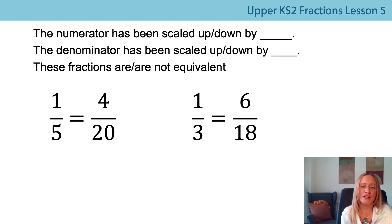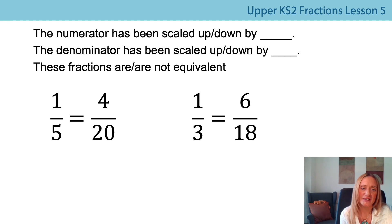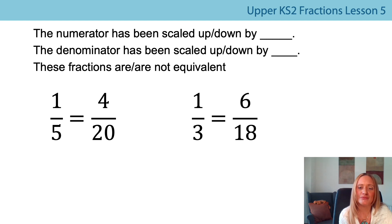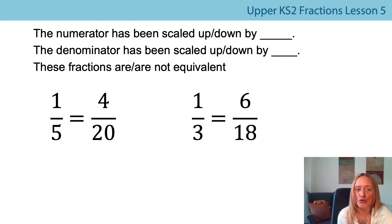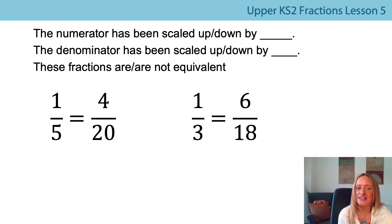So have another look at those two examples — you might want to pause again. Really try to identify those multiplicative relationships both horizontally and vertically. Draw those arrows on and check that they're the same, then tell me if those fractions are or are not equivalent. For the first example, the numerators have been scaled up by a factor of four and the denominators have been scaled up by a factor of four horizontally. But then vertically, the numerator has been scaled up by a factor of five — one times five is five and four times five is 20.